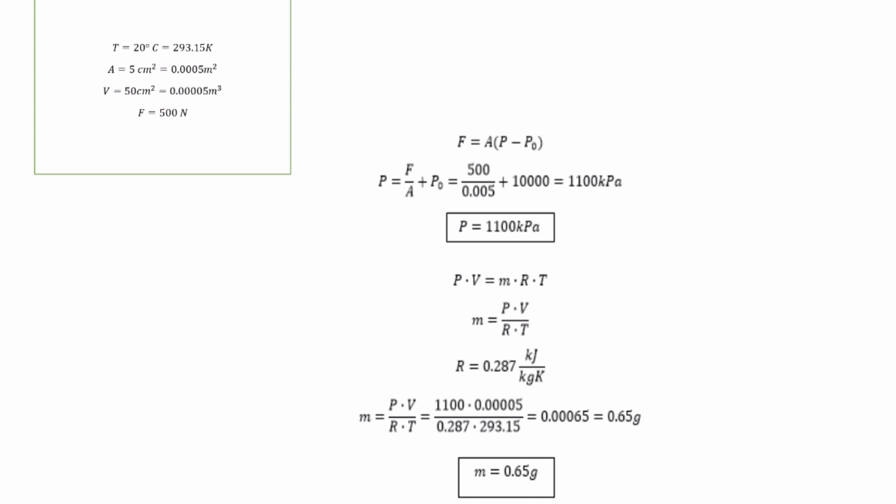Force on the door is given by F equals A times (P minus P0), where P0 equals 100 kPa is the outside atmospheric pressure.